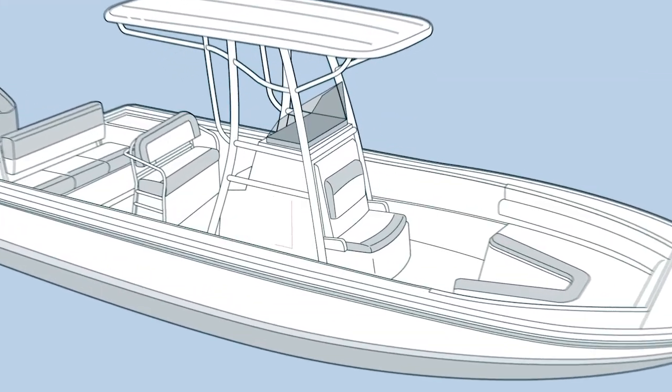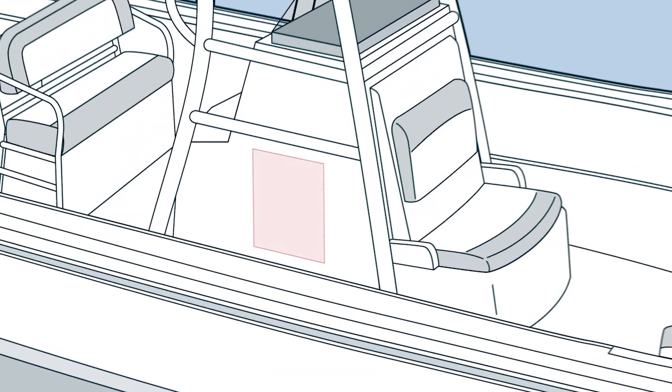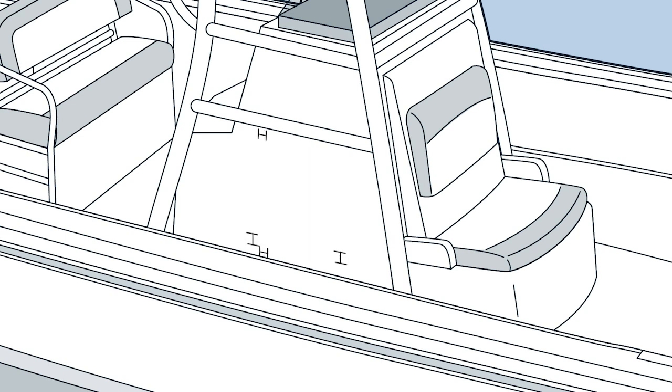Determine the location for installation and make sure there is enough clearance behind it to accommodate the cabinet. Measure the height and width of the cutout needed and trace it on the mounting location. Make the cutout parallel to the sole.